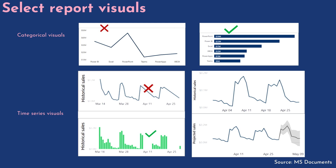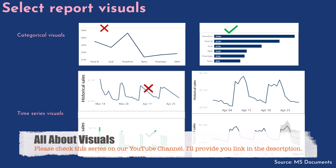Now let's discuss selecting report visuals. There are basically two kinds of report visuals: categorical visuals and time series visuals, each with their own appropriate use. Whenever you are working with categorical data you should use a bar chart, and if you are using time-based or time series data — whether it's a date, year, or similar — you should always use a line chart. There is also a series on the YouTube channel to help you decide which visuals to use when, with a link in the description.